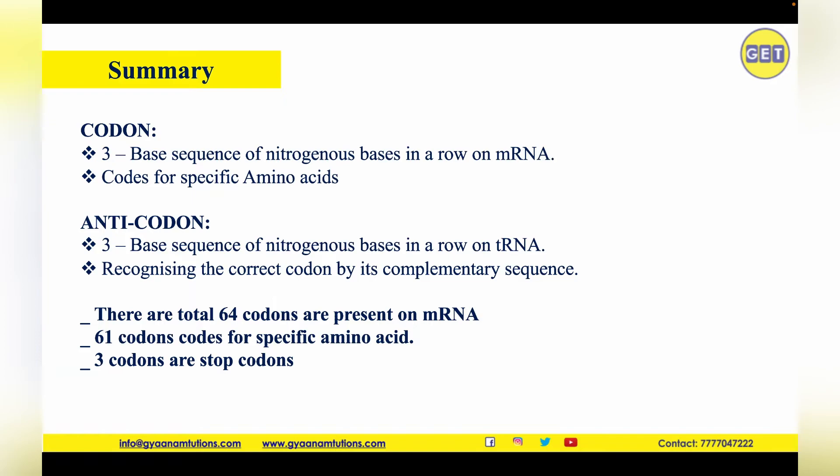Now let's sum up the whole thing. Codons are nothing but the three base sequence of nitrogenous bases which is brought up by mRNA. The same way, it is also going to be coding for specific amino acids. According to these codes, we are going to have anticodons. According to the codon, we will be having anticodon which will be brought by tRNA. This is also going to have three base sequence, and this is going to be recognized by the tRNA as per the complementary structure.